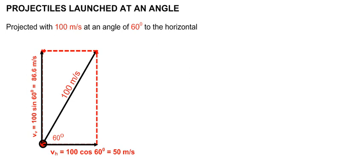We shall now look at projectiles launched at an angle. Such projectiles have horizontal and vertical components to their velocity. If a projectile is launched at 100 m per second at an angle of 60 degrees to the horizontal, we have seen in a previous video that the horizontal velocity is 50 m per second and the vertical part of its velocity is 86.6 m per second.